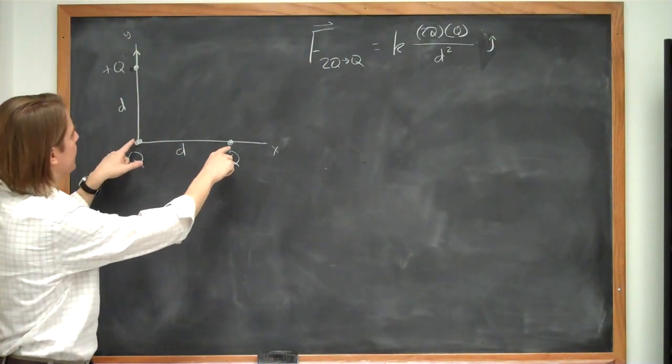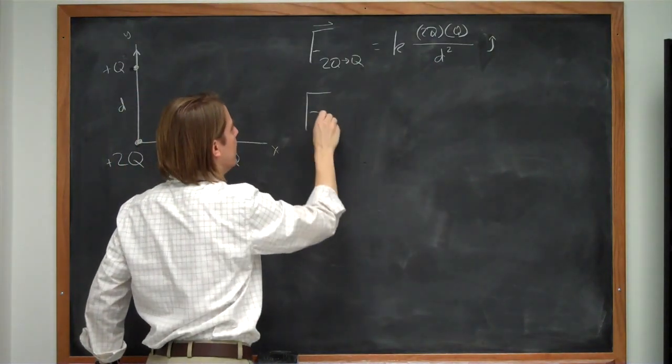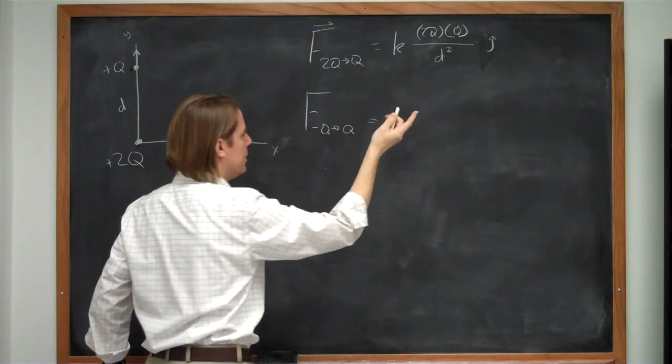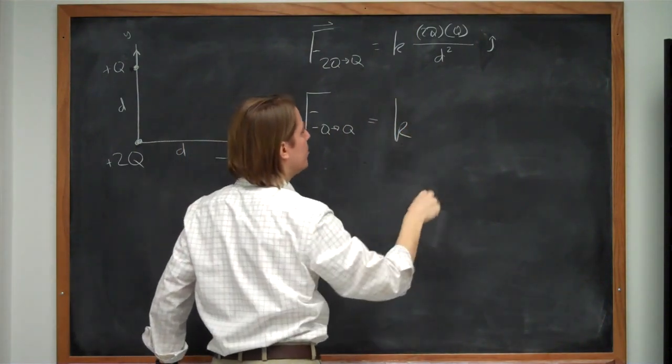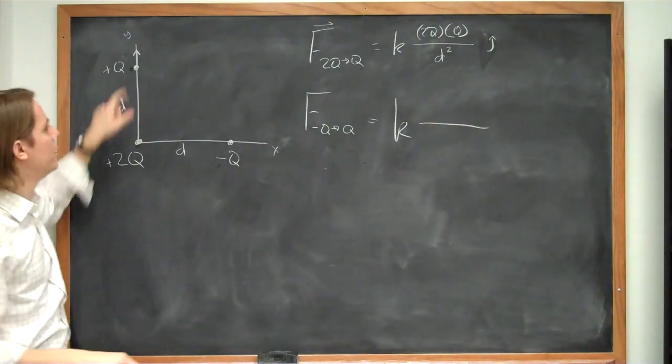So now we have to get the force of minus q on q. So f of minus q acting on q. Of course, it's going to be k, Coulomb's constant. The products of the charges are minus q times plus q.